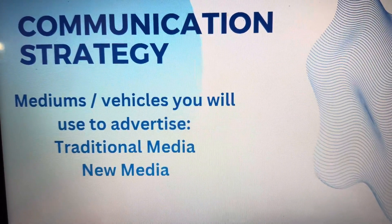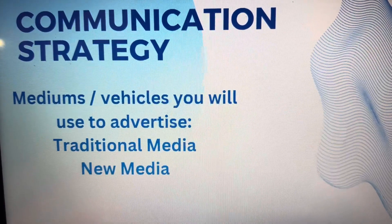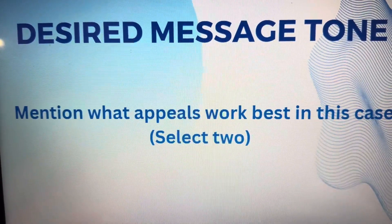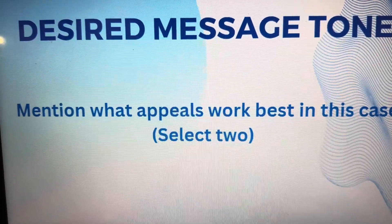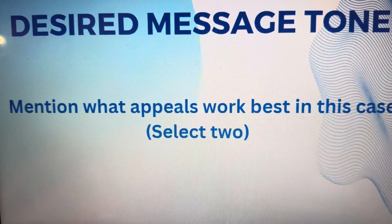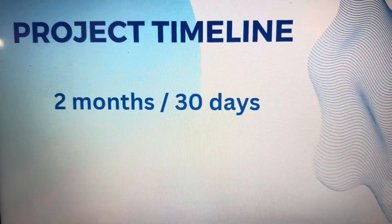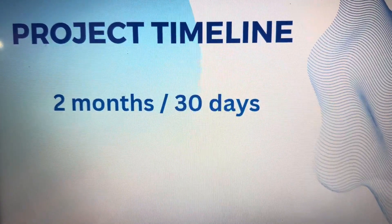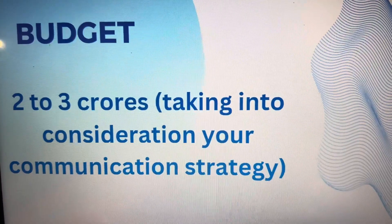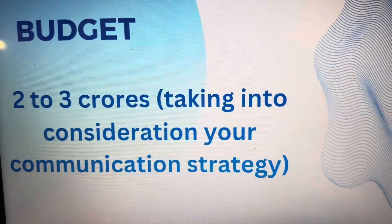For communication strategy, we use certain vehicles. You will be asked to use certain vehicles in your paper itself — so this is where you mention where you will advertise the particular product. The desired message tone is something you need to work on — decide what appeal works best in the case you have, and ideally select two feelings, for example joy and surprise. Your project timeline should be about 30 days to two months, and the budget should range between two to three crores, with a maximum of five crores, taking into consideration the communication strategy you are using.